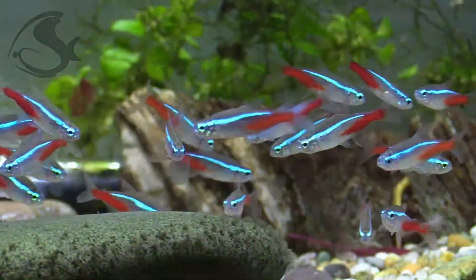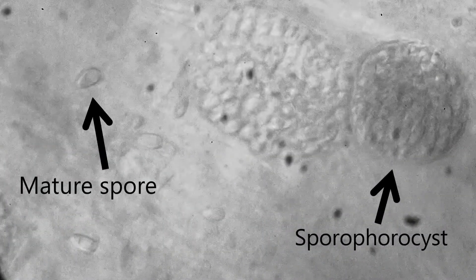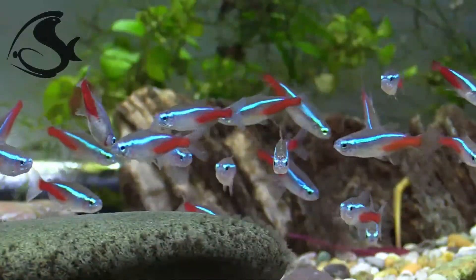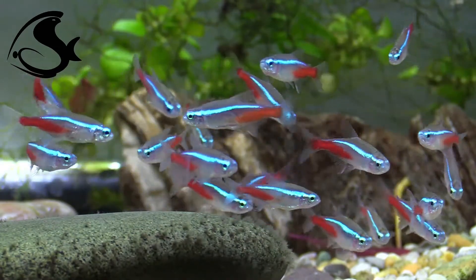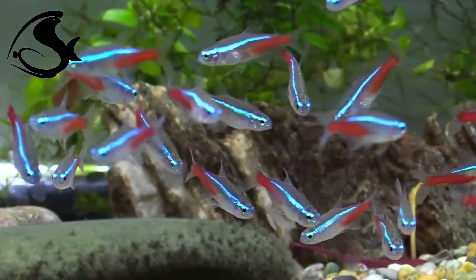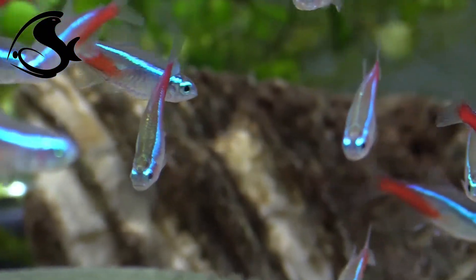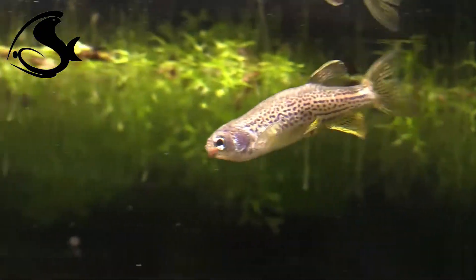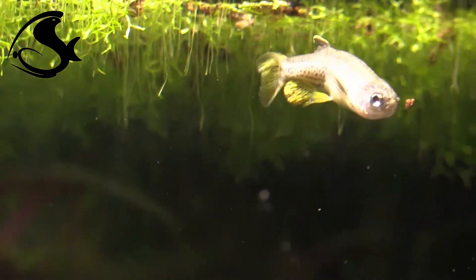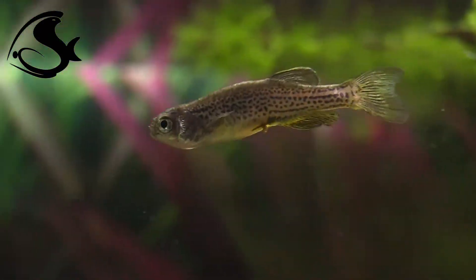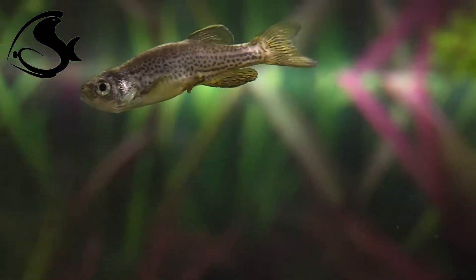Microsporidia are obligate intracellular spore-forming parasites that are fungi or closely related to them. They are common parasites in ornamental fish and are host and tissue-specific; however, some species can infect a broad range of fish. The Microsporidia Pseudoloma species, Heterospora species, and Pleistophora species are the most common infectious organisms found in aquarium fish.